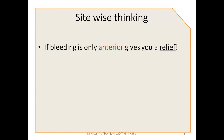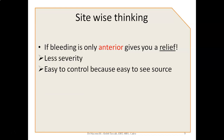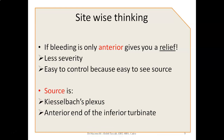You also need to have what's called site-wise thinking — correlating your management with the site of epistaxis. If the bleeding is only anterior, this gives you some relief, because it's usually less severe and usually easy to control because you can see the source. The source of bleeding will be the Kesselbach's plexus, which is in the medial area of the nasal septum, or it can be in the anterior end of the inferior turbinate, which is also accessible.